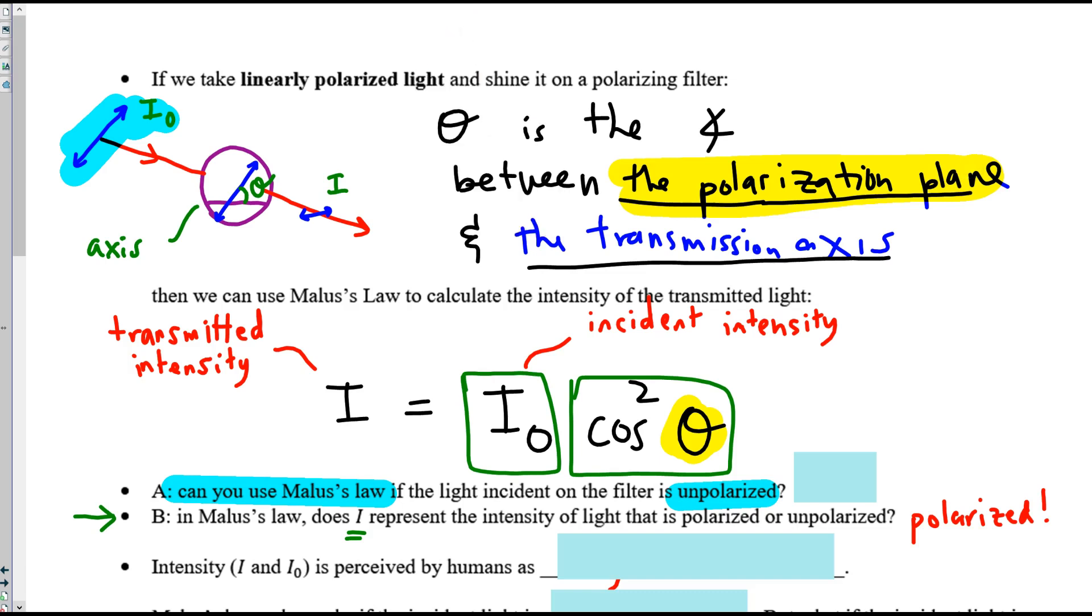And theta is the angle between the transmission axis and a single polarization plane. If, on the other hand, there were all directions represented, that's unpolarized light, we would have nothing to put in for theta. There's no single value. So we cannot use Malus's law for unpolarized incident light.